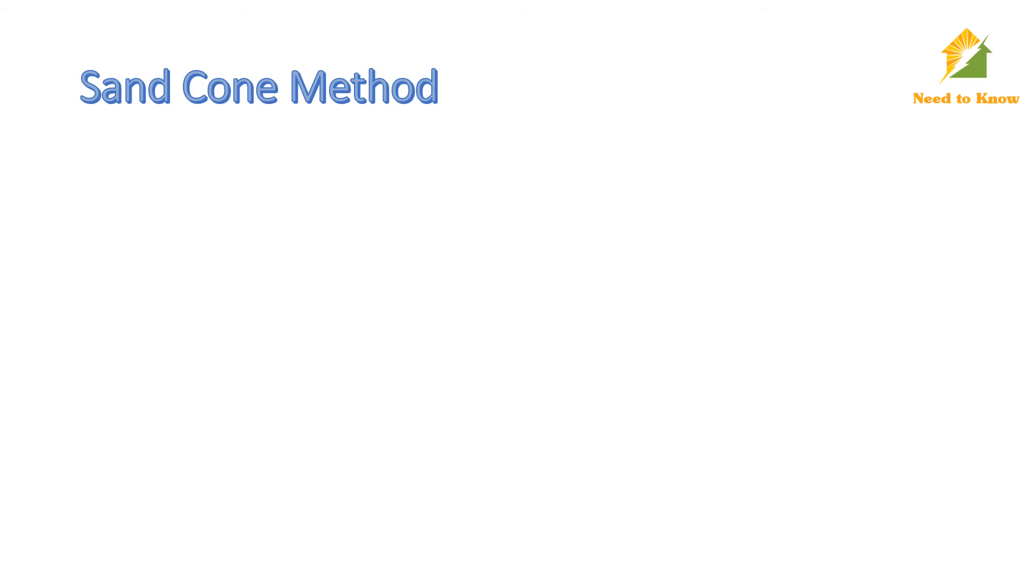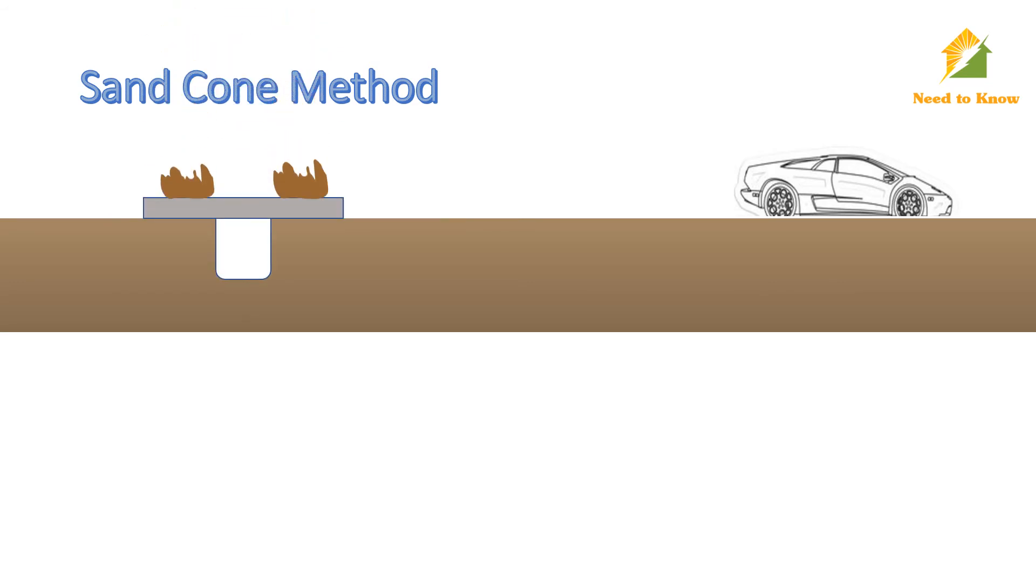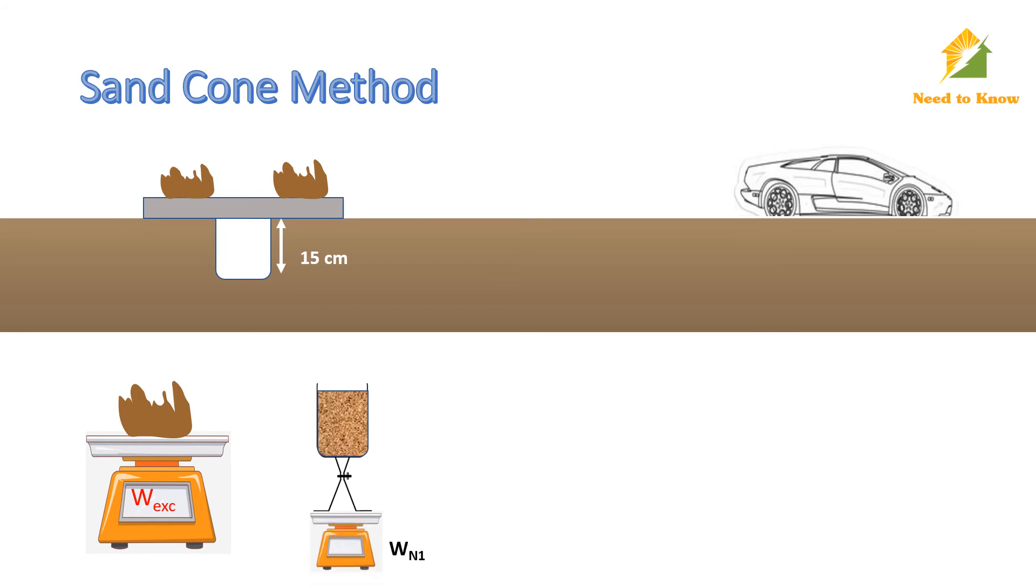Now come to the site where soil compaction is to be determined. Clean some portion on the ground and place a metal tray having a hole in the center. Excavate a hole through knife or any sharp tool, roughly up to 15 centimeters. Collect the excavated material in a plastic bag so that no moisture is lost and weigh it. Note this weight as W excavated. Now fill the sand cone apparatus with calibrated sand, weigh the setup and note as W sand 1.